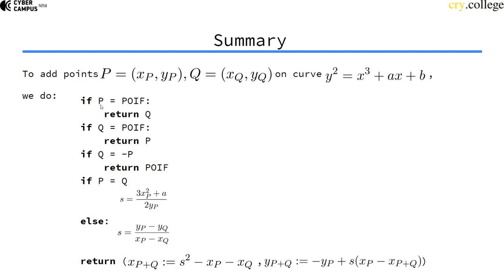we would first have to check, okay, is p this mystic point at infinity? If so, it's the neutral element, so the result is q. If q is the point at infinity, we do the same for p.